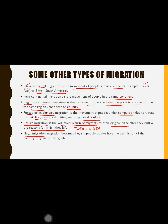The last type is illegal migration. This occurs when people enter a country without permission. If someone tries to enter a country without the required authorization, they become illegal migrants. These are the different types of migration.